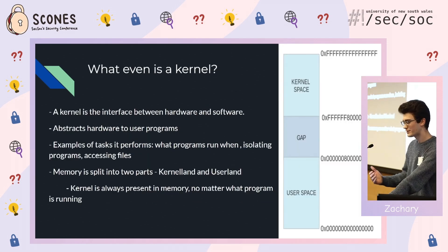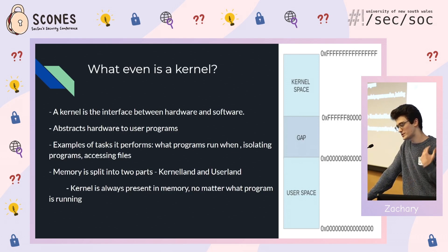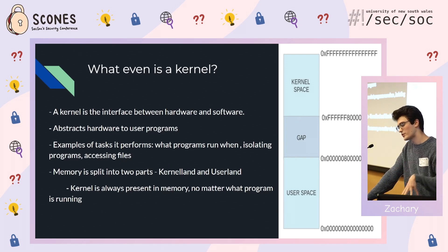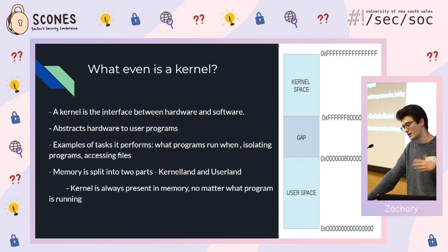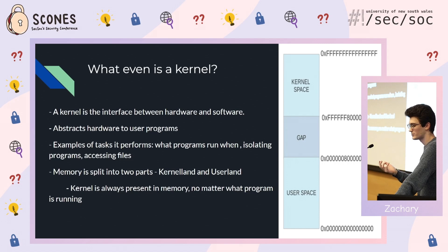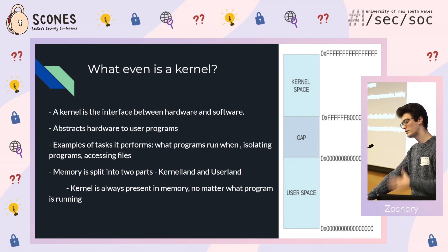What even is a kernel? A kernel is just a program — a very big and very important one. It acts as an interface between hardware (RAM, CPU, hard drive) and software, mainly by abstracting hardware so user programs don't need to worry about what CPU they're running on. It also handles scheduling and file I/O — fundamental OS tasks.